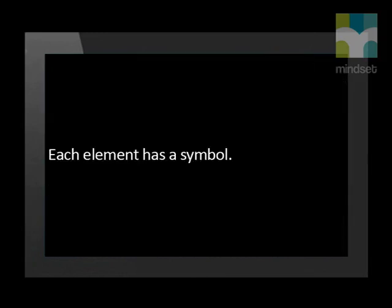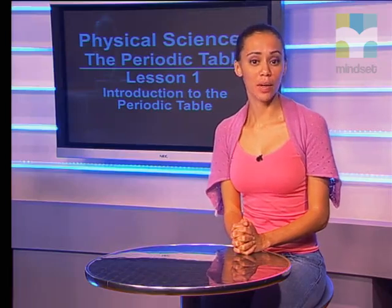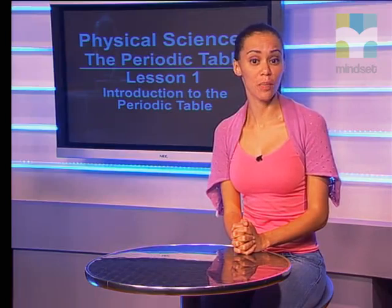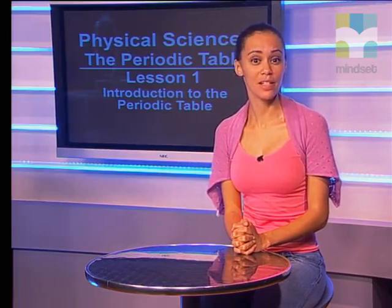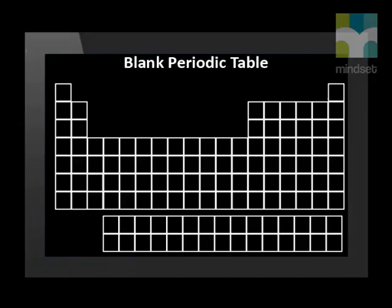In order to use the periodic table, we need to know the symbols for the different elements. This is very important, as it will not only help us find the correct information on the periodic table for a given element, but we will use these symbols in all chemistry. We will go through the periodic table and fill in the symbols for the elements that you need to know. This works best if you have a blank periodic table to fill in as well.